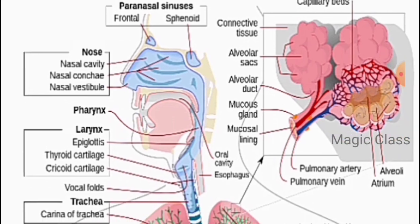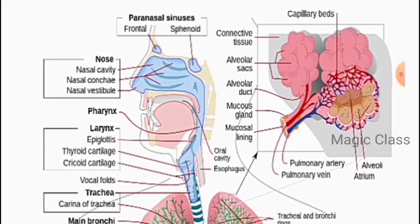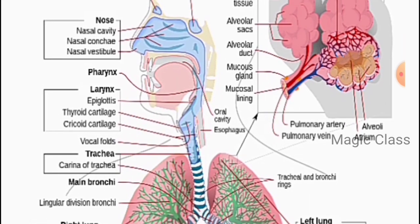After passing through the nasal cavity, the air enters the pharynx — as shown in the diagram. Then it goes into the trachea, or windpipe, which is an elastic tube extending down the length of the neck and partly into the chest cavity. So the path is: nostrils → nasal cavity → pharynx → trachea.